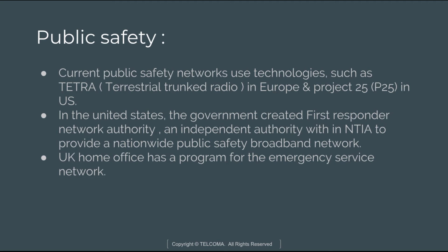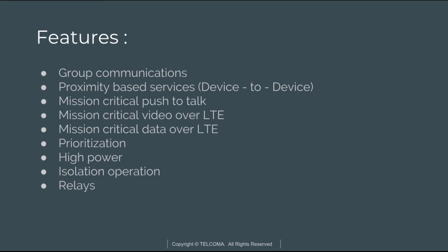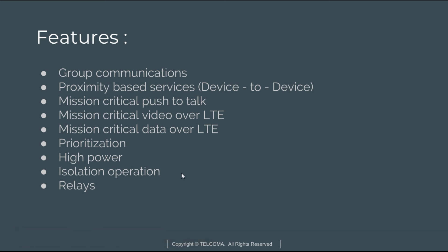Using LTE for public safety is a complex undertaking because public safety needs different approaches from the commercial network. In order to address those needs, different features are required, and those features are defined by 3GPP. These LTE features for public safety networks are not required in commercial networks. The special features include group communications, proximity-based services, mission critical push-to-talk, mission critical video over LTE, and data over LTE.